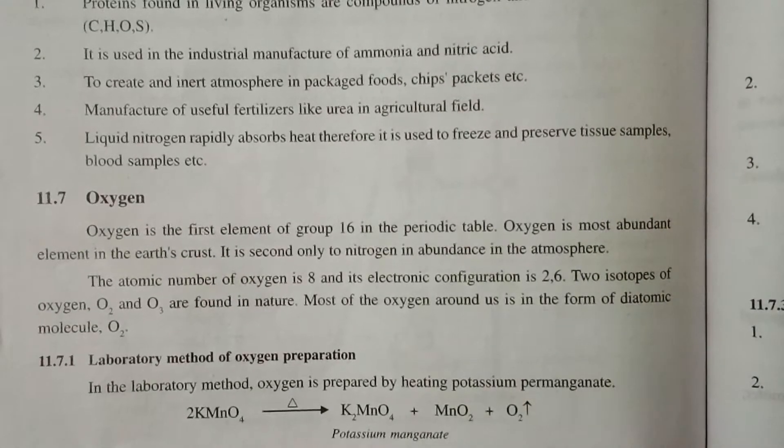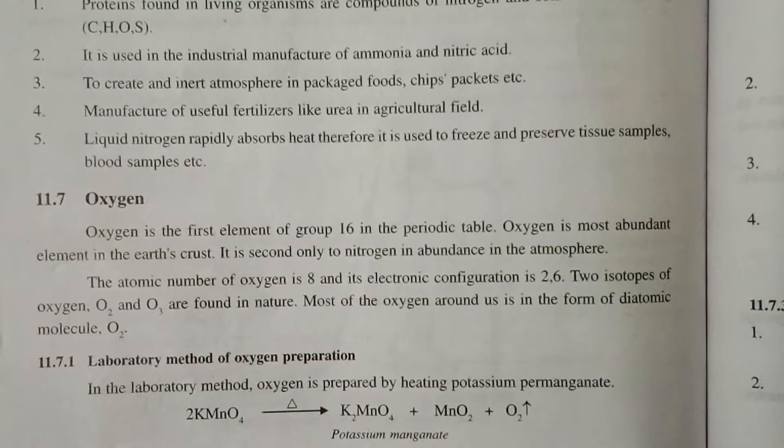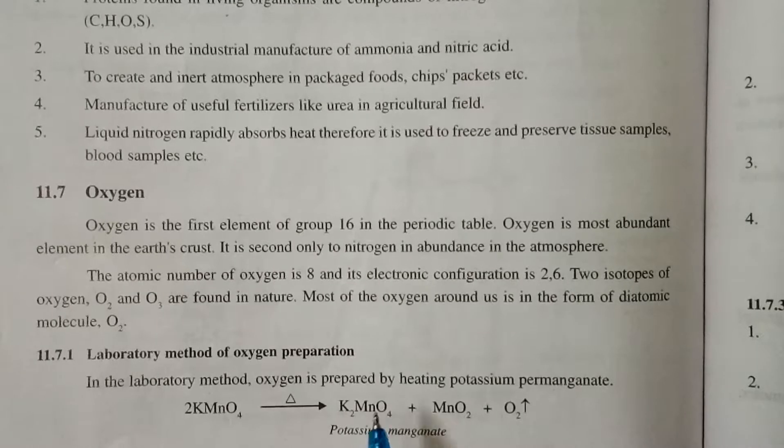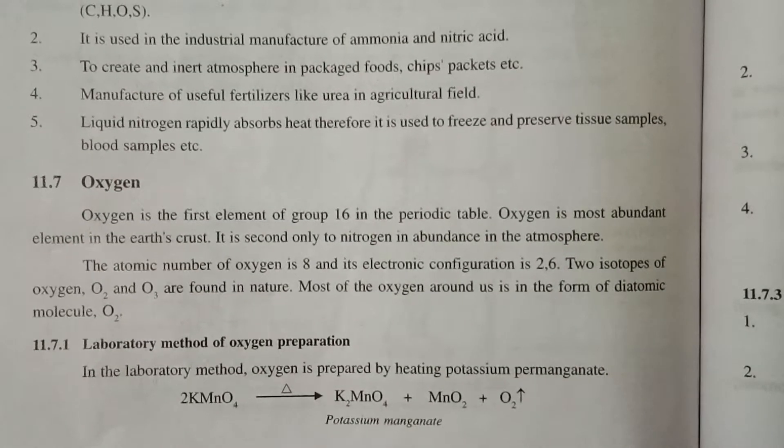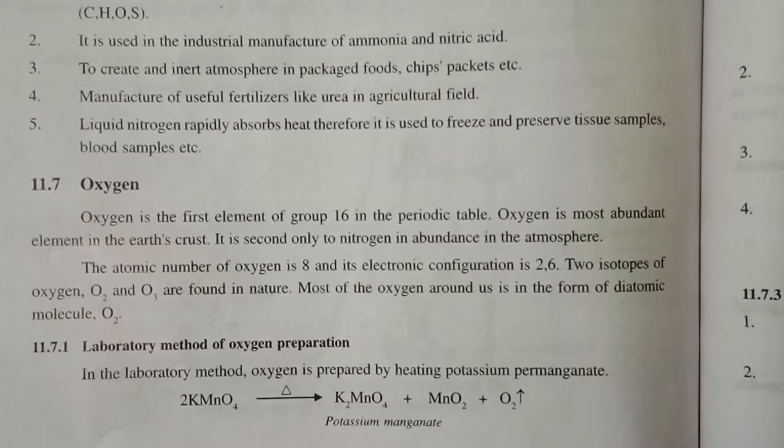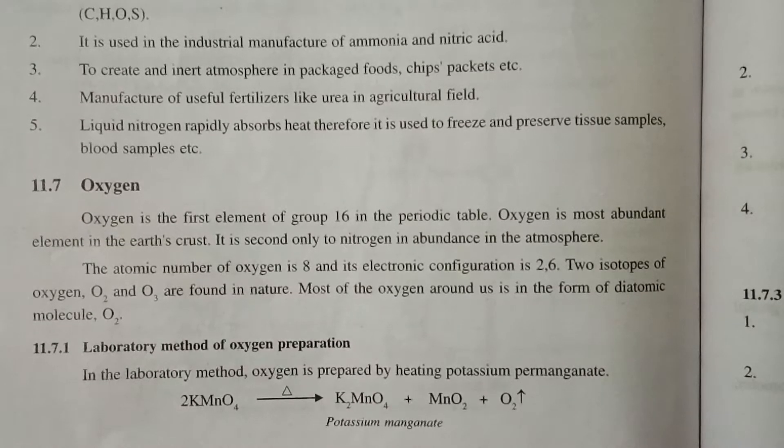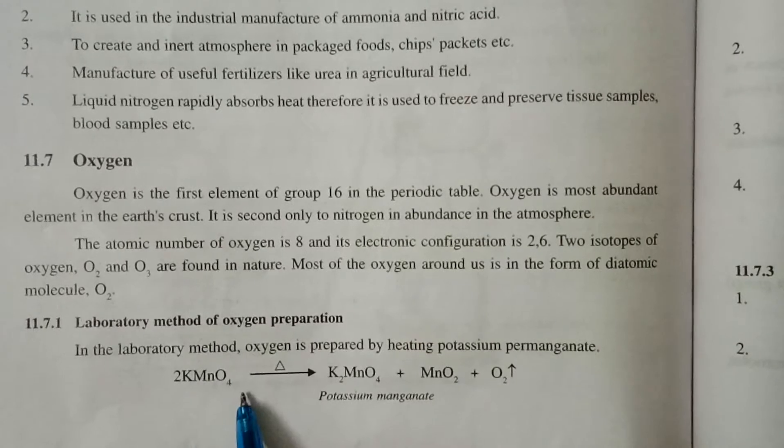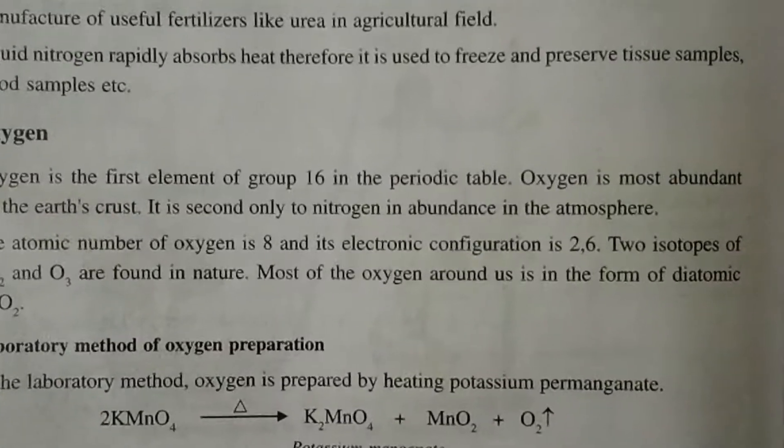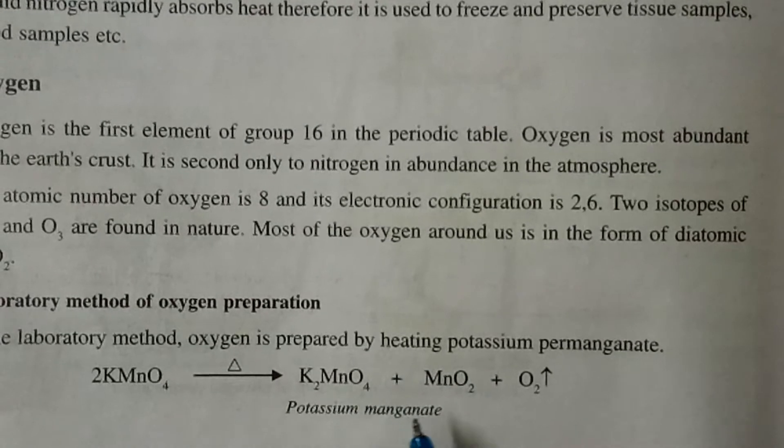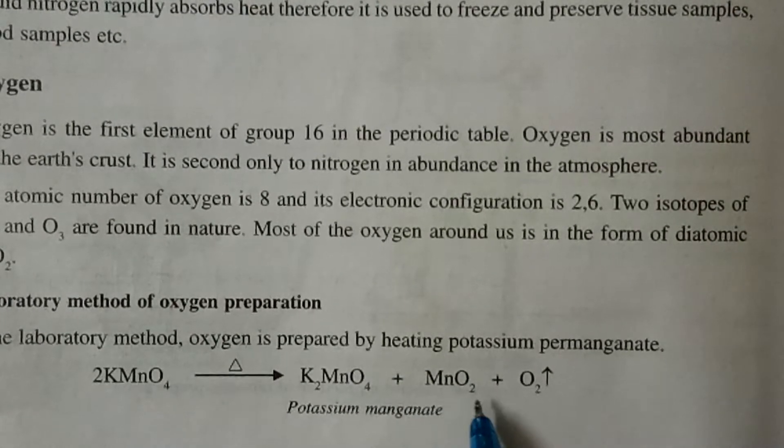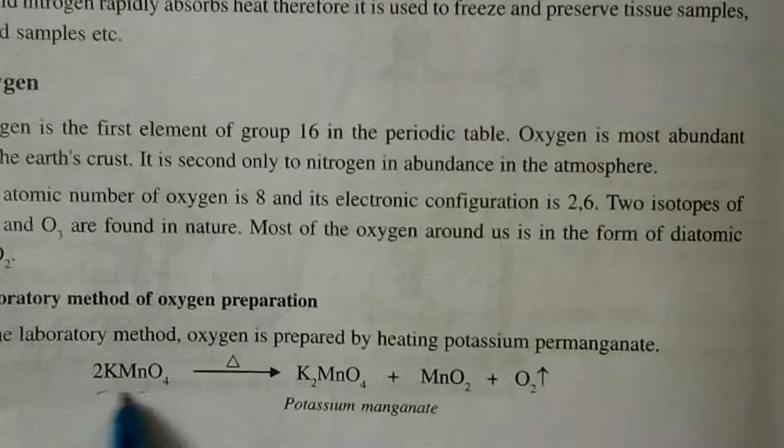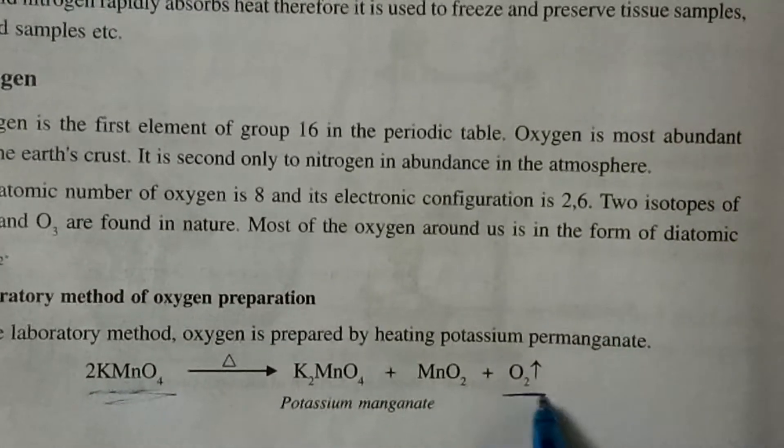We can prepare this oxygen gas in laboratory also. I will tell you about the method of laboratory preparation. In laboratory method, for the preparation of oxygen, potassium permanganate is heated. Potassium permanganate is KMnO4. When this KMnO4 is heated, potassium manganate, manganese dioxide and O2 is formed. So from KMnO4 on heating, we can get oxygen gas.